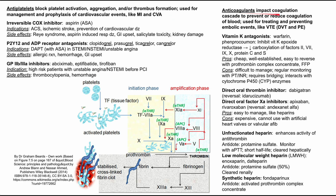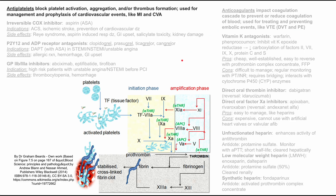Anticoagulants, on the other hand, impact the coagulation cascade to prevent or reduce coagulation of blood. They're used for treating and preventing embolic events like venous thromboembolisms, which includes DVTs — deep vein thromboses — and PEs — pulmonary embolisms. So: prevention and treatment of heart attacks and strokes use antiplatelets; treatment and prevention of DVTs and PEs use anticoagulants. Now let's go through them one by one.